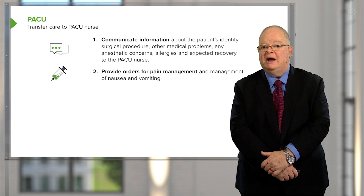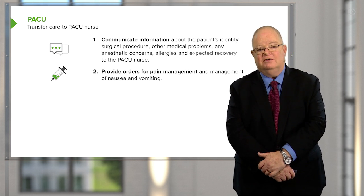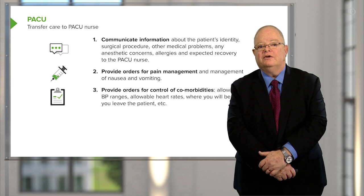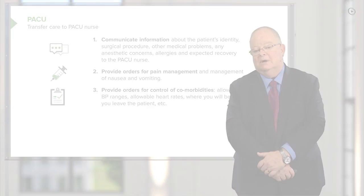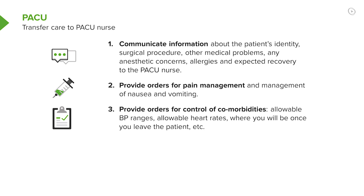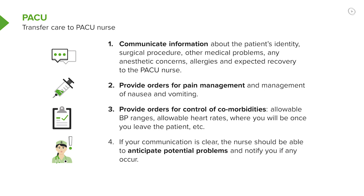Provide orders for pain management and management of nausea and vomiting, and provide orders for control of comorbidities. For example, you may specify that the patient's blood pressure is allowed to rise to a certain level, but beyond that the nurse should call you or administer a specified drug. The same applies for heart rates. If your communication is clear, the nurse should be able to anticipate potential problems and notify you if any occur.